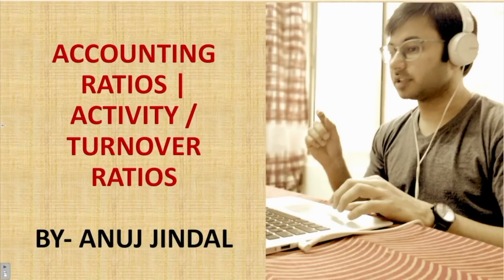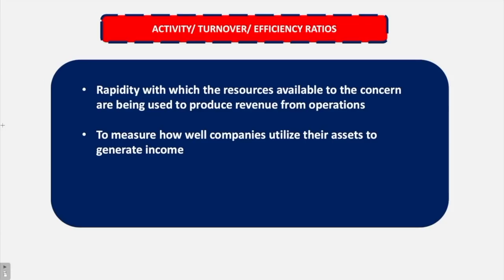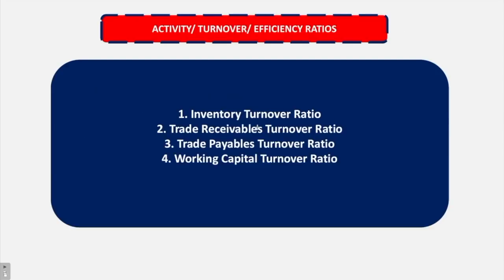Operations means activity, turnover means sales or revenues, and efficiency means how efficient is the organization in converting its assets into sales. Activity turnover or efficiency ratios means the rapidity with which the resources available to the concern are being used to produce revenue from operations. Whatever assets you have in the organization, how efficiently are you able to utilize those assets in order to produce revenues — that is the basic meaning of activity or turnover or efficiency ratios.